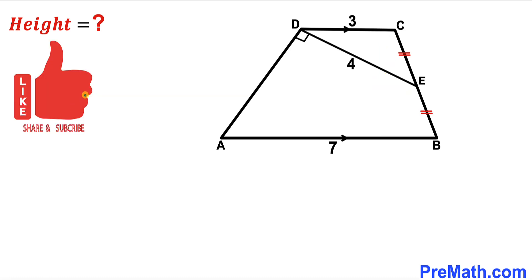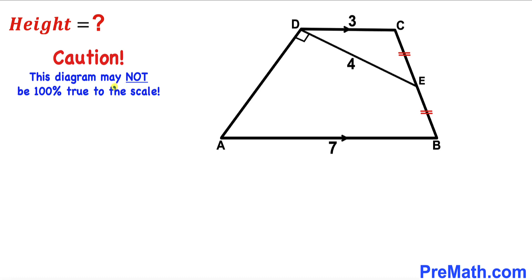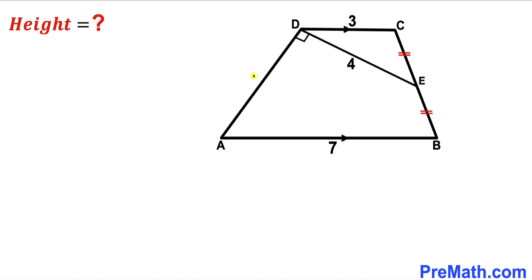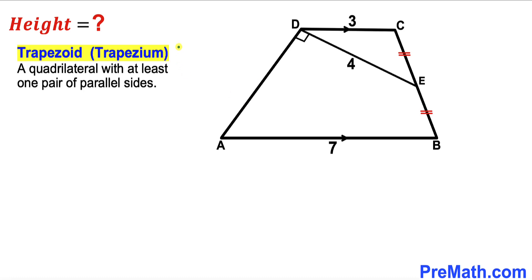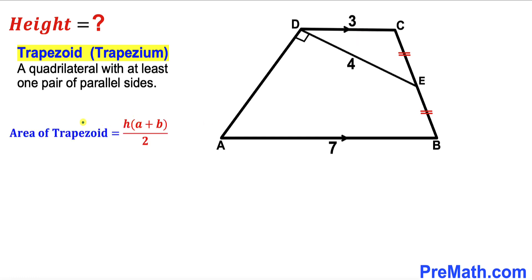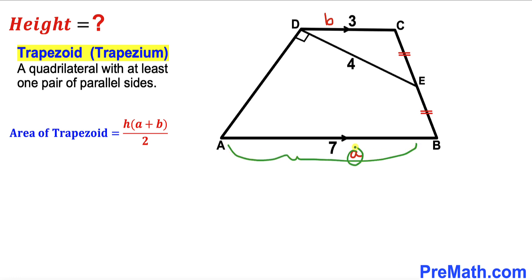Please don't forget to give a thumbs up and subscribe, and keep in mind that this figure may not be 100% true to scale. Let's get started. First, let's recall the definition of a trapezoid — sometimes called a trapezium — a quadrilateral with at least one pair of parallel sides. Now let's recall the area of a trapezoid formula: area equals height h times base a plus base b, all over 2.